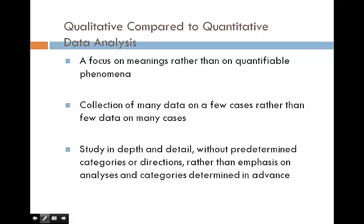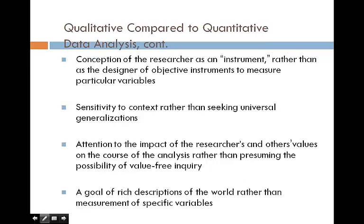There are major differences between qualitative and quantitative research. Qualitative focuses on meanings rather than quantifiable phenomena, collects many data on a few cases rather than few data on many cases, studies in depth and detail without predetermined categories, conceptualizes the researcher as instrument, and emphasizes sensitivity to context rather than seeking universal generalizations.